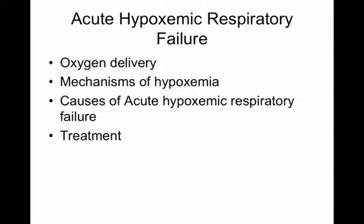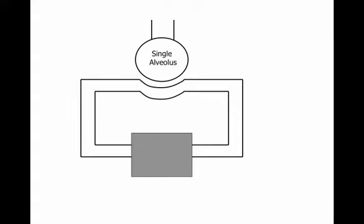In order to talk about acute hypoxemic respiratory failure, we're going to talk a little about oxygen delivery and some of the mechanisms of hypoxemia, which will set us up to discuss how we treat hypoxemic respiratory failure. This is the single alveolus model of oxygen delivery. In this model, the heart isn't even shown—the heart is a blind pump. It just pumps the blood that returns back to it.